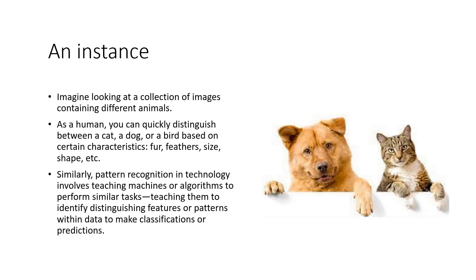Here is a small instance. You have a collection of images containing different animals. We as humans can quickly distinguish between a cat, a dog, or a bird based on fur, feathers, size, shape, and many other features. Pattern recognition in technology involves teaching machines or algorithms to perform similar tasks — teaching them to identify distinguishing features or patterns within data to effectively make classifications or predictions. If I can identify a cat or dog from a picture due to its features, similarly we can train a machine to do exactly that.